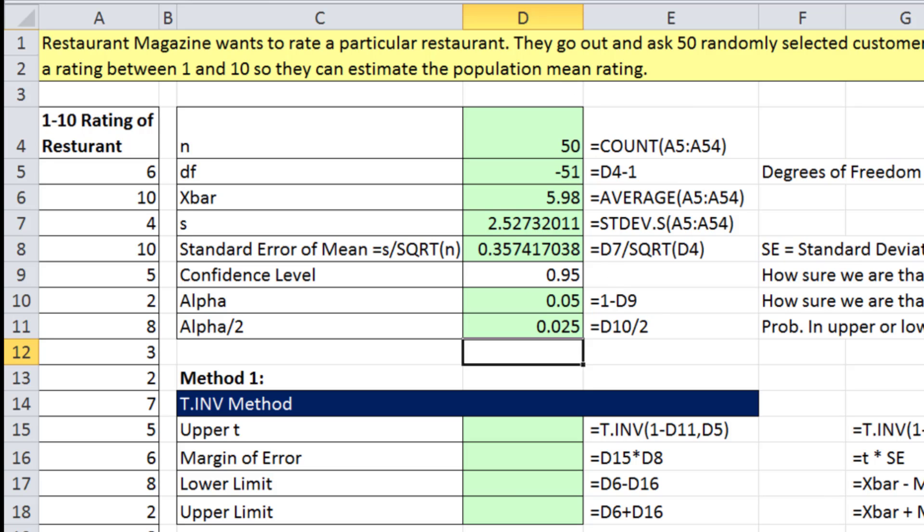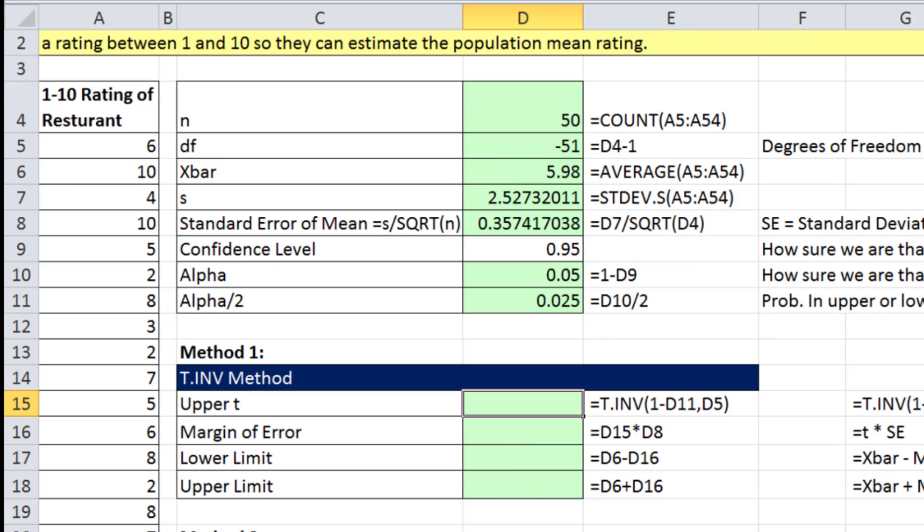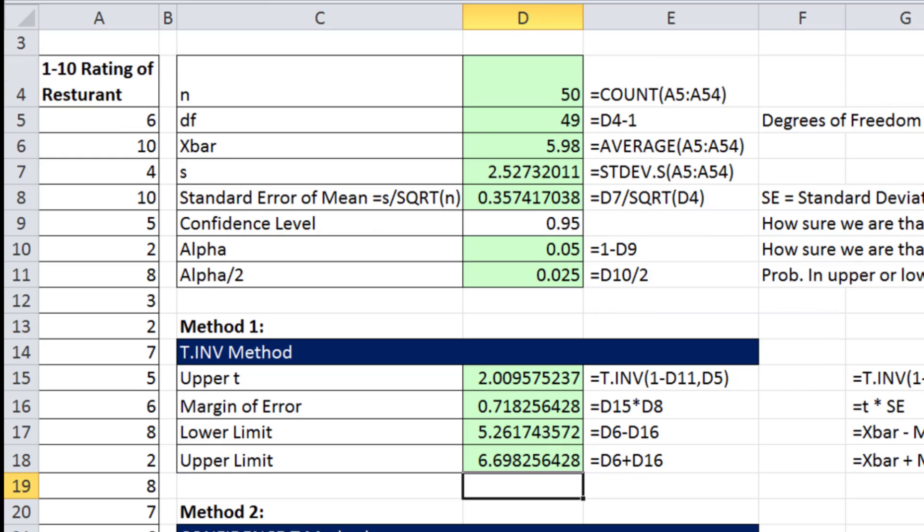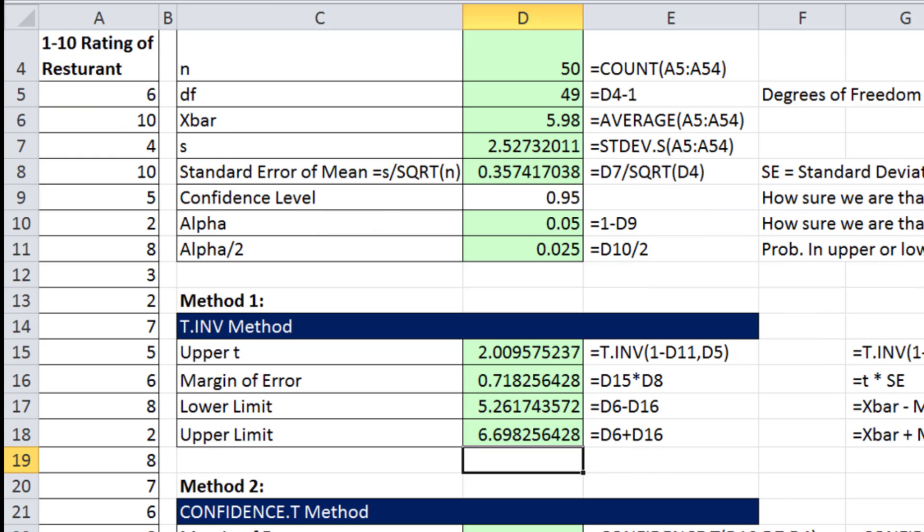All right, so we have our inputs. And then method 1, we can use our t dot inverse. We'll calculate the upper t, so equals t dot inverse. Probability, 1 minus alpha divided by 2. And the degrees of freedom. Remember, the t has to know which of the many distributions to go to, so degrees of freedom. That's the input. Notice I didn't mind, because I know this is a formula input. So I can go and change it, and boom. Margin of error, I'm going to say number of standard deviations times our standard error. We take our x bar, which is our rating minus and x bar our rating plus. So it looks like 5.3 to 6.7. That's a reasonable range for the population average restaurant rating.